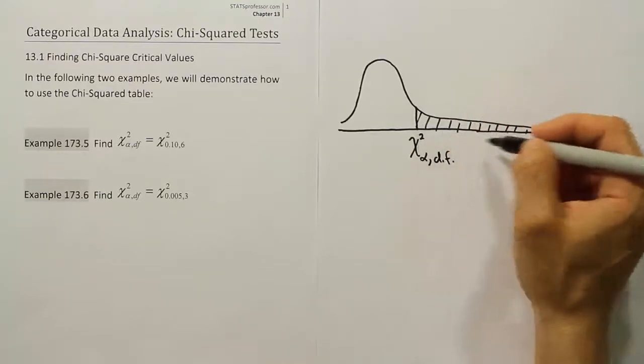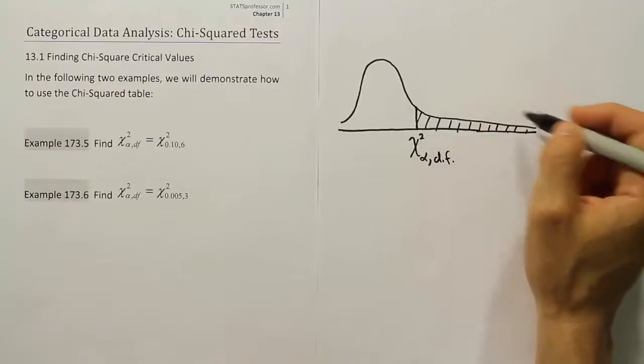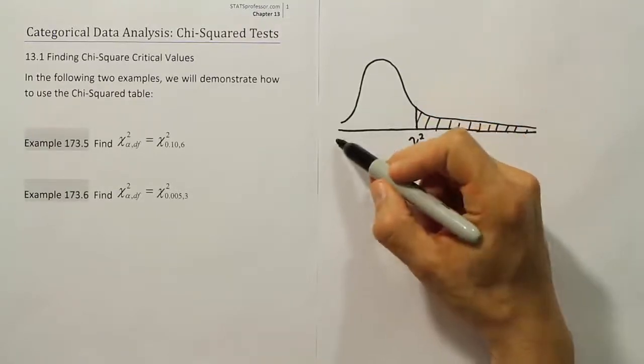This is going to be the area in our hypothesis testing. We're going to say that this is the rejection region and this will be the do-not-reject region.